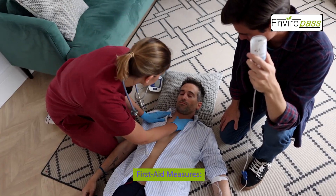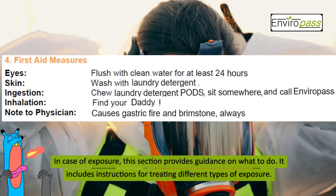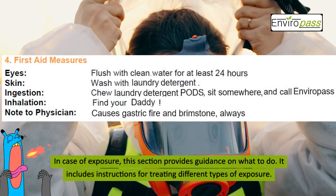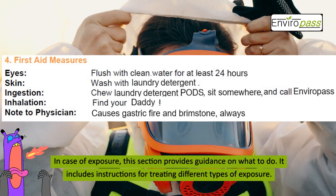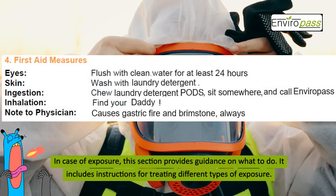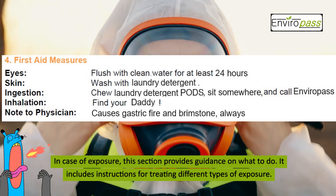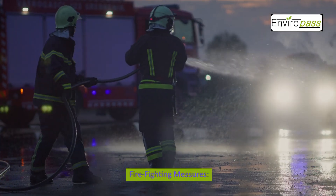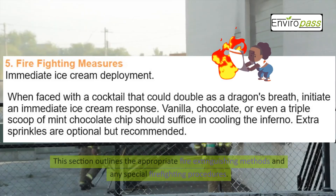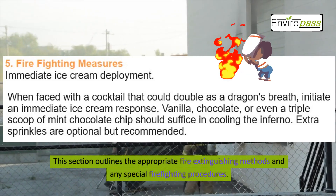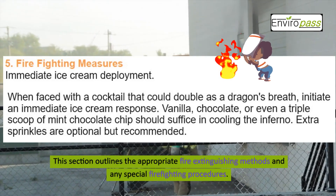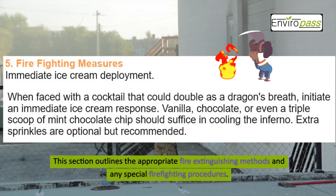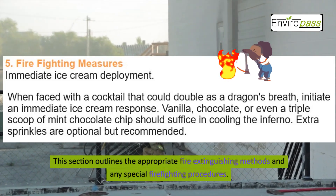Section 4 covers First Aid Measures. In case of exposure, this section provides guidance on what to do, including instructions for treating different types of exposure. Section 5 is Firefighting Measures, which outlines the appropriate fire extinguishing methods and any special firefighting procedures.